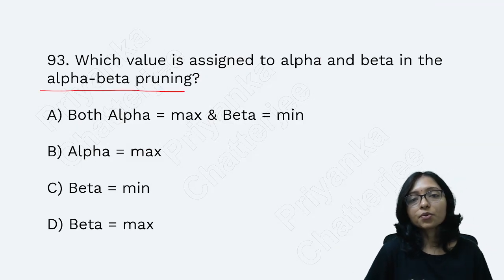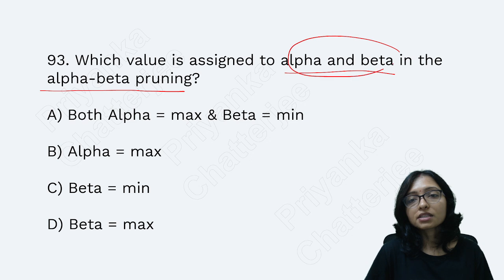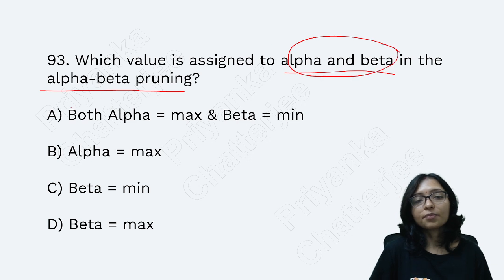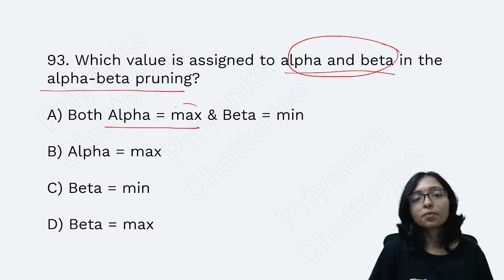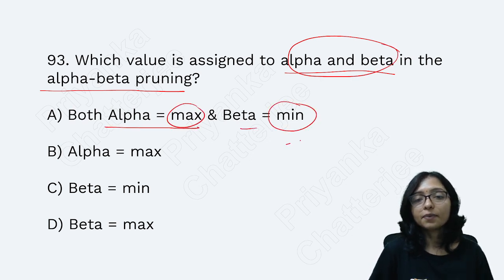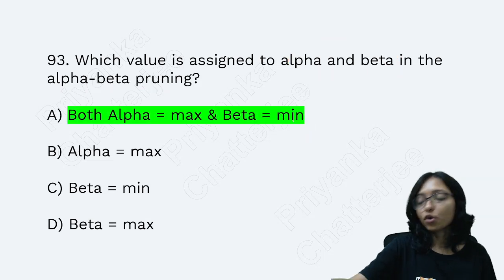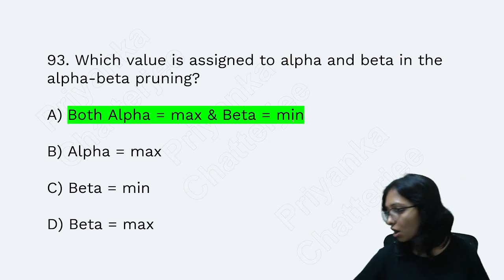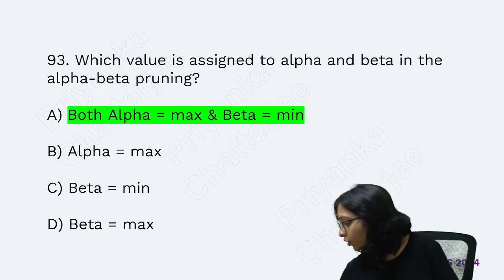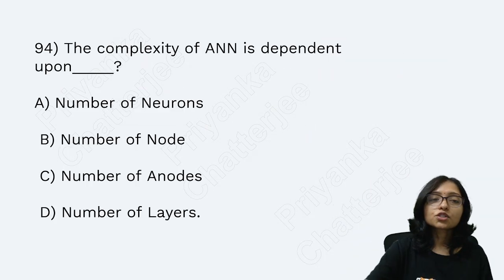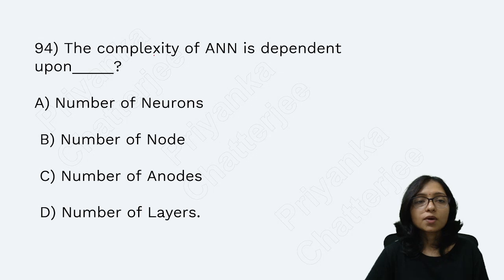At the time of alpha-beta pruning, what are the values of alpha and beta? Alpha is always for the MAX player and beta is for the MIN player. This is a very important topic in AI.